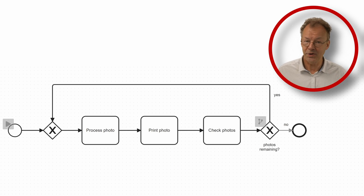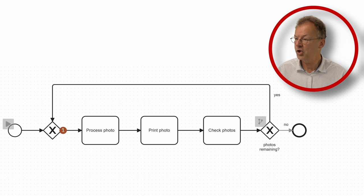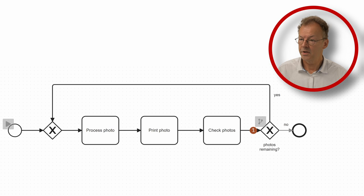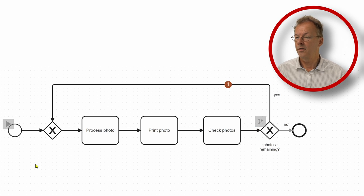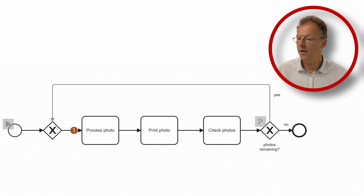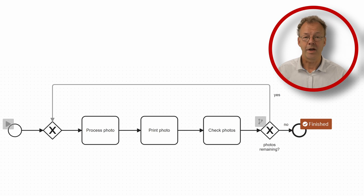Now we look at the post-test solution. So here we have the post-check. So we always process one photo, print this photo and do the check afterwards. And in the first iteration we say yes. We have more photos remaining. So we process the next one, print it. And now the check says no, no more photos remaining and we are done.